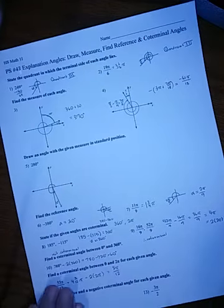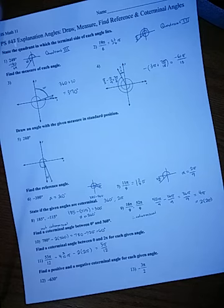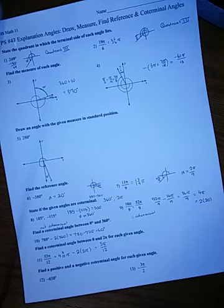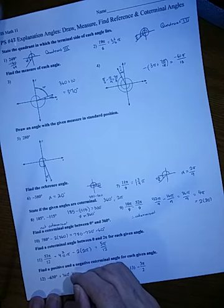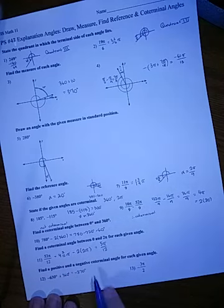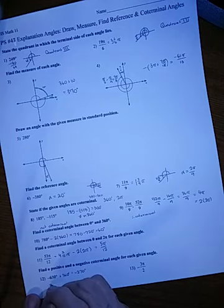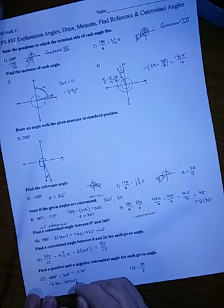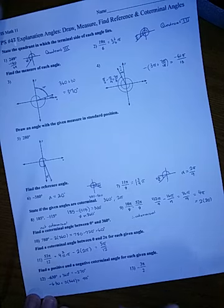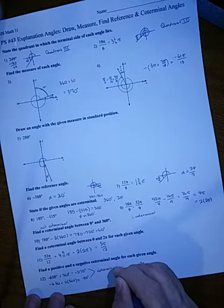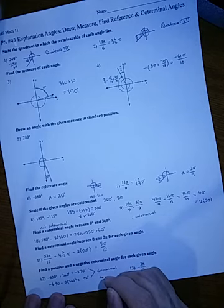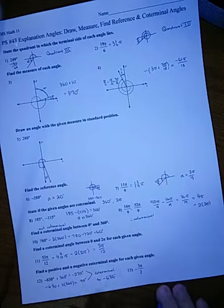If we want to find coterminal angles, again, we're going to add any number of 360s or 2 pi's, depending on whether we're working in degrees or radians. If I take and add one 360 to this, that's negative 270 degrees. So that's a negative coterminal angle. If I take negative 630 and I add two 360s, I will end up with 90 degrees. So both of these are coterminal to the original one. One being positive and one negative.